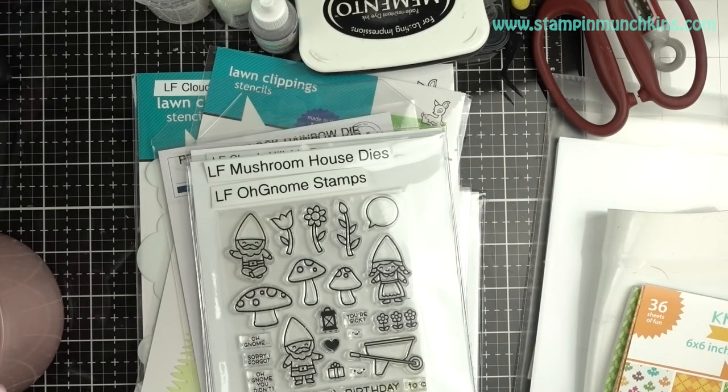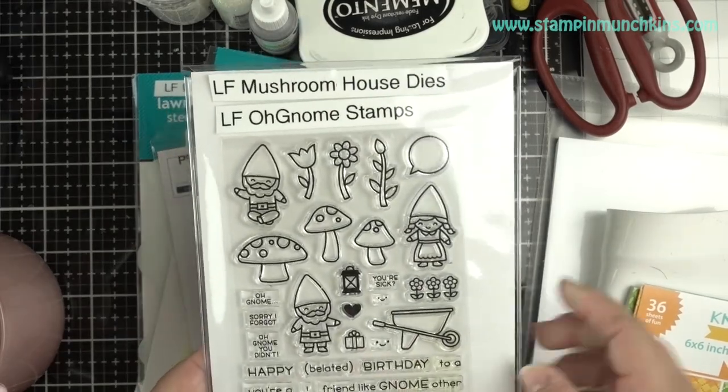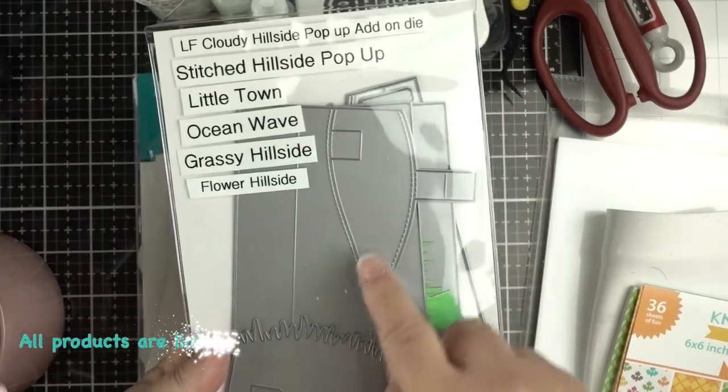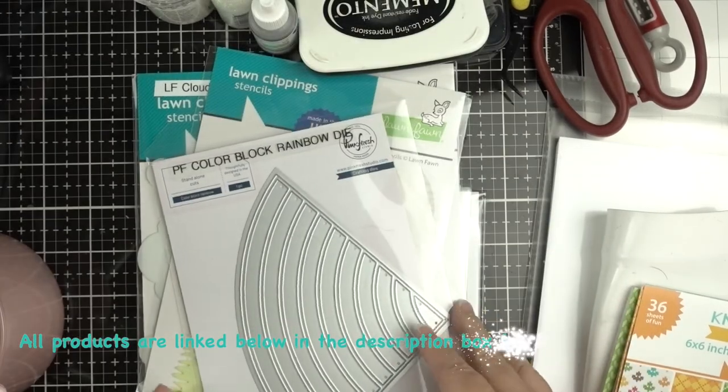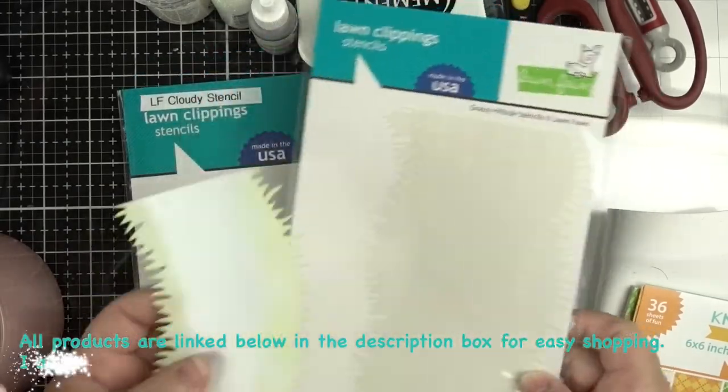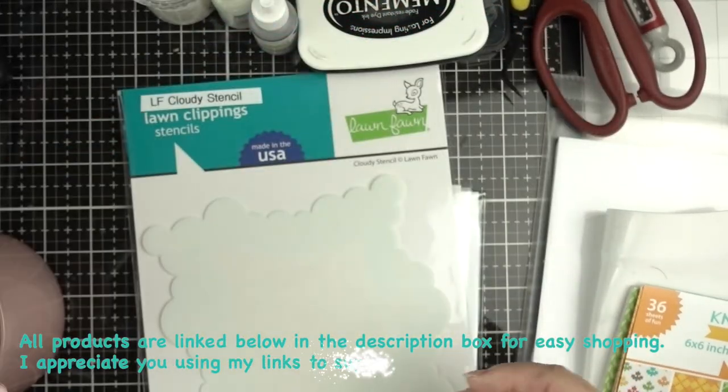Here's what we're using today: Lawn Fawn Oliver's Alphabet, Lawn Fawn Little Gnomes stamp, Lawn Fawn's Hillside Pop-Up and Grass, Pink Fresh Rainbow, Lawn Fawn grass and cloudy stencils.